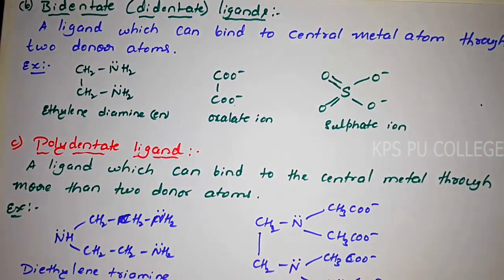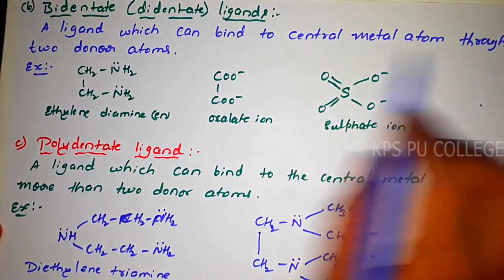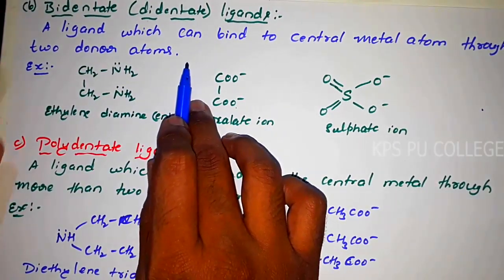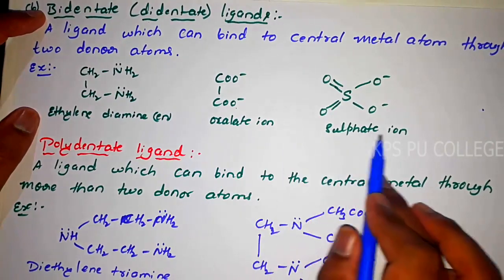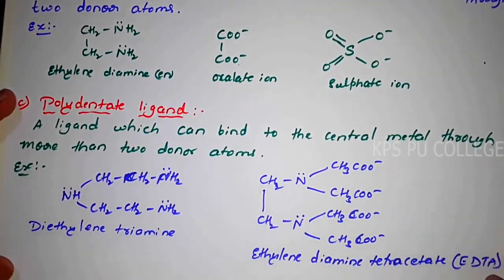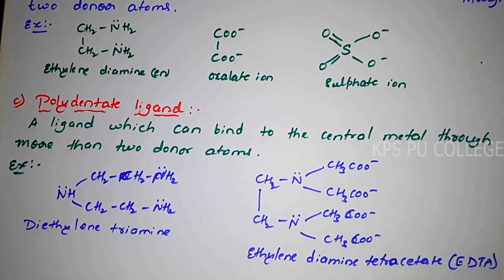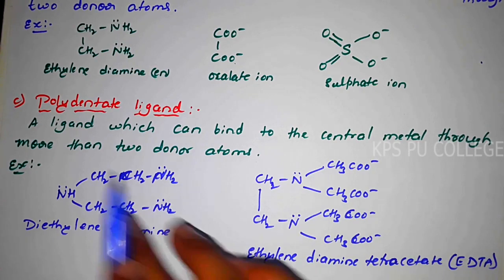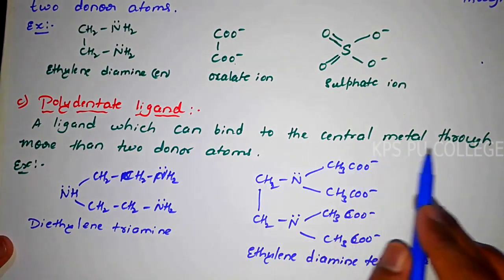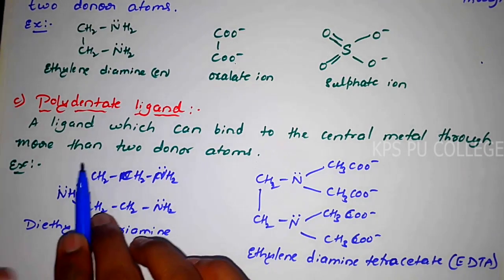These are the examples for bidentate ligands. The next type is the polydentate ligand. A ligand which can bind to the central metal atom through more than two donor atoms — it may be tridentate, tetradentate, pentadentate, or hexadentate. So more than two donor atoms.